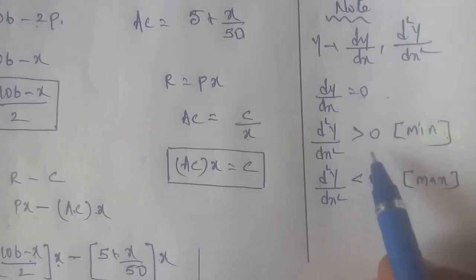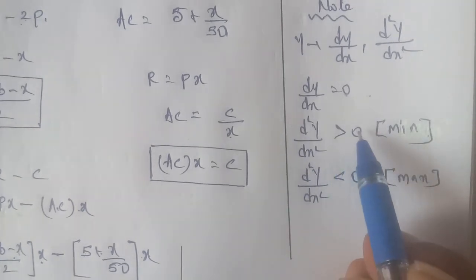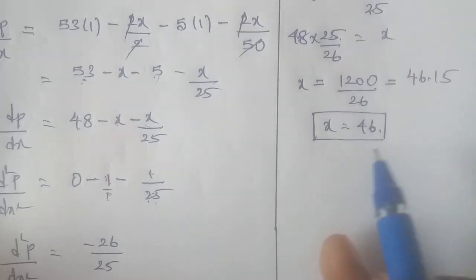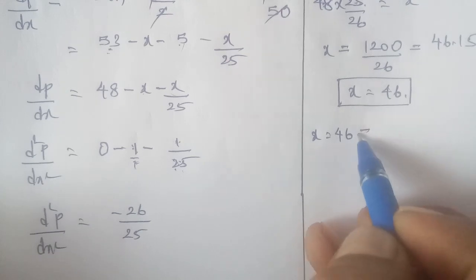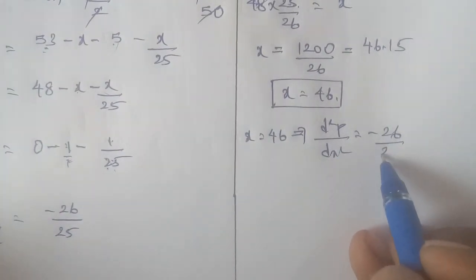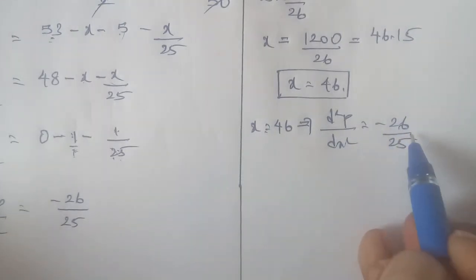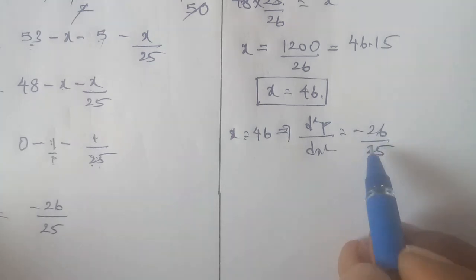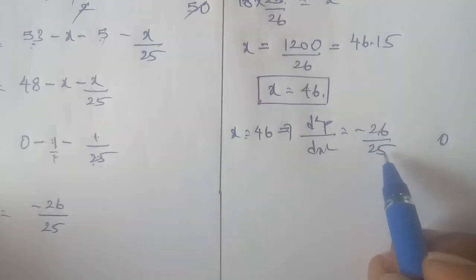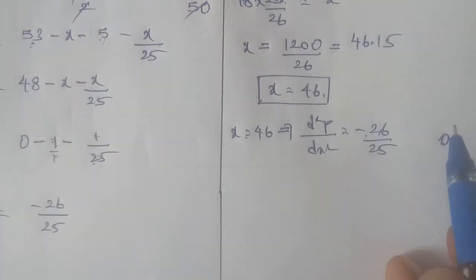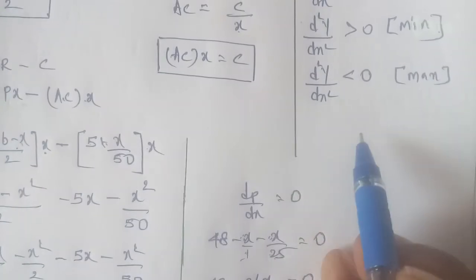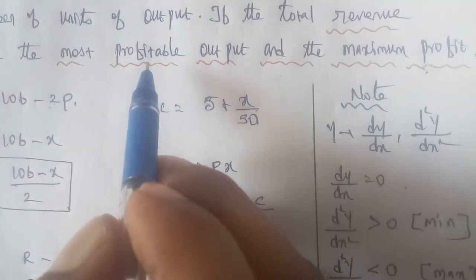Now apply the second derivative test. At x equals 46, d square p by dx square equals minus 26 by 25, which is less than 0. Since the second derivative is less than 0, the profit is maximum at x equals 46.